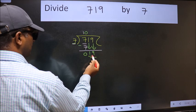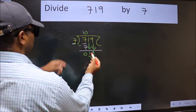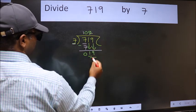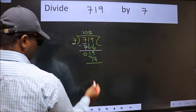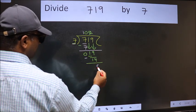Now 19. A number close to 19 in the 7 table is 7 twos, 14. Now we should subtract. We get 5.